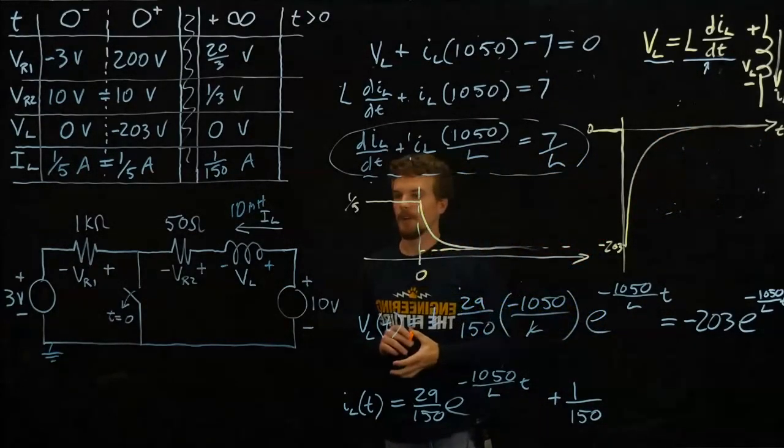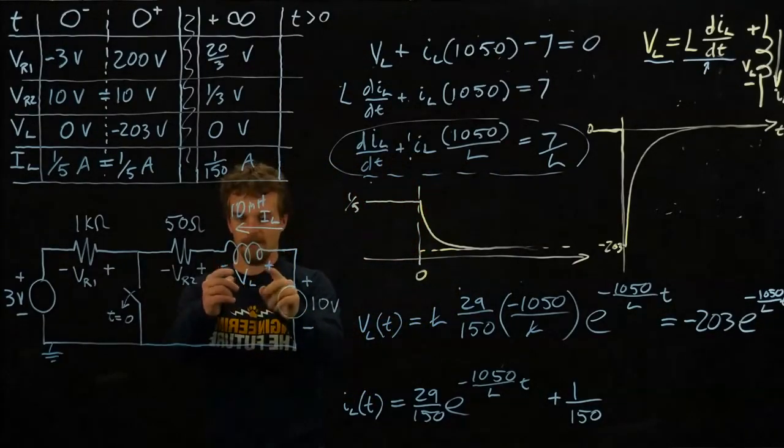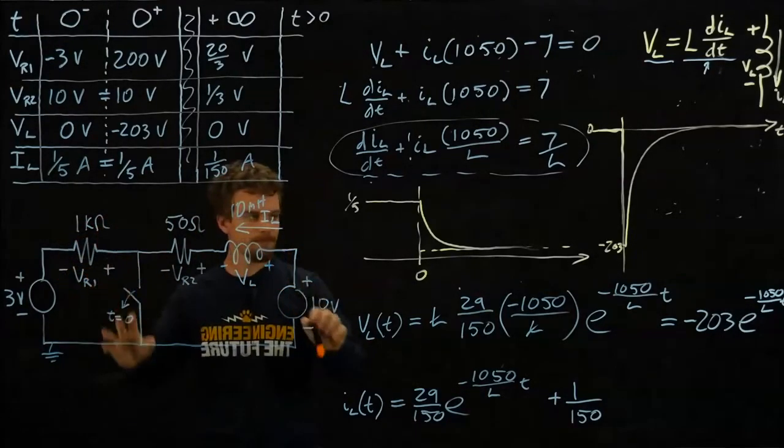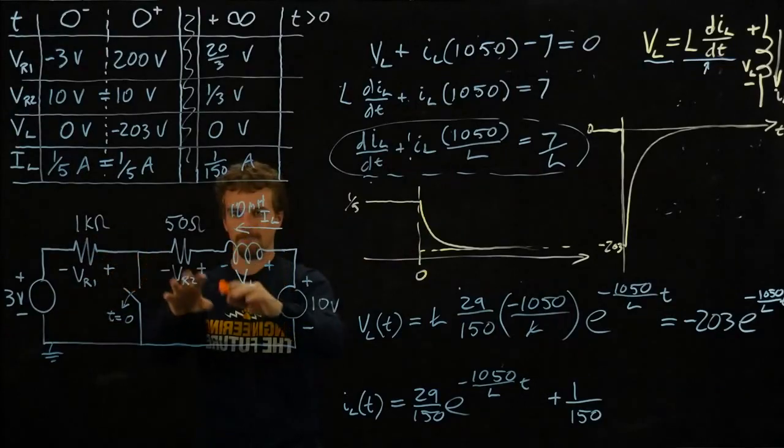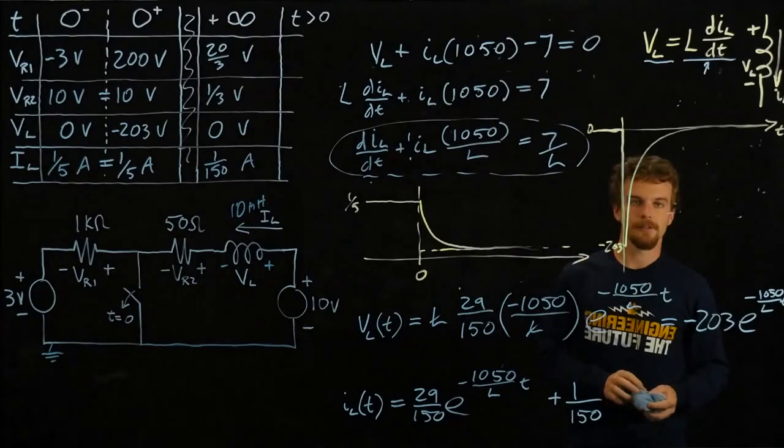So all we're saying is that when that switch closes, a voltage shows up across this inductor all of a sudden to keep this current going, and then it kind of tapers back down to whatever it needs to be later. Alright, so that's good for this week. Thanks.